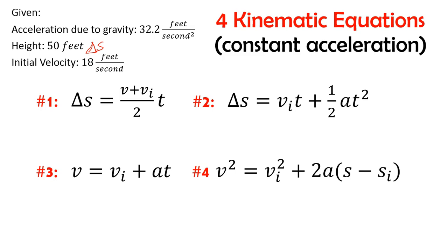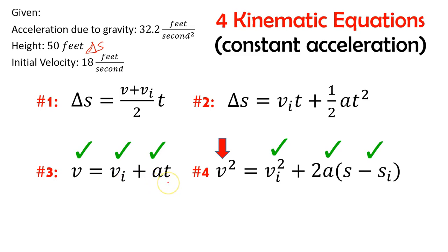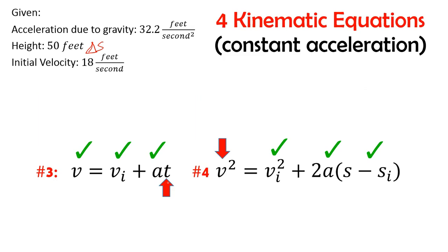We're going to try to find one unknown and then look for a second equation to get the second unknown. If we look at equation number four, it gives us initial velocity, acceleration, and delta s of 50 feet, and that equation can get us to our final velocity — the velocity just before we hit the ground. Once we know that velocity, we can look at equation number three, which also has initial and final velocity and acceleration, and solve for the time. So we can solve this problem using equations three and four.